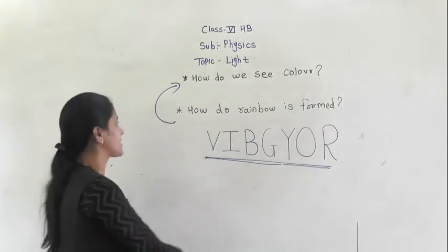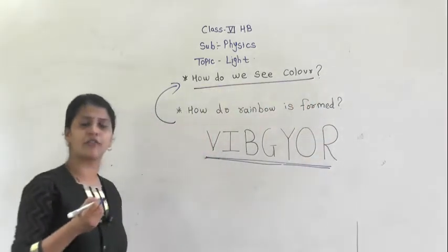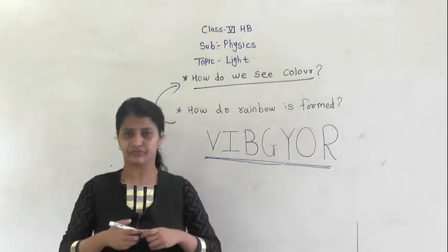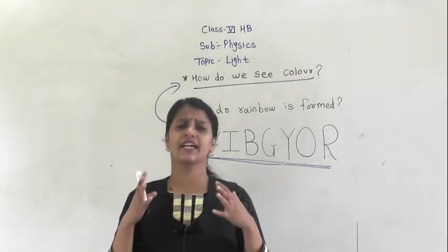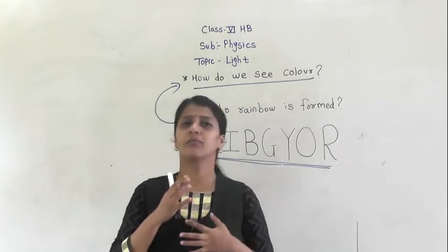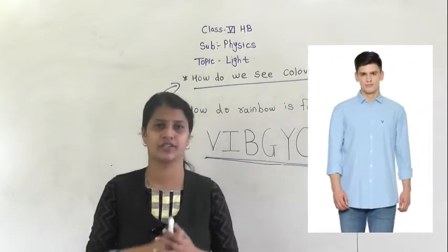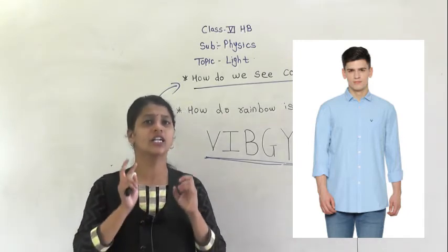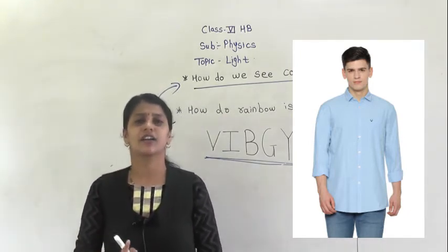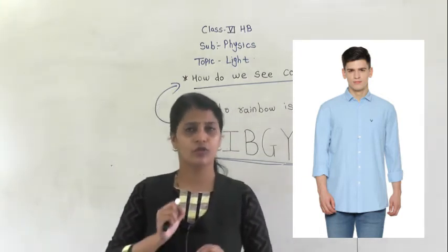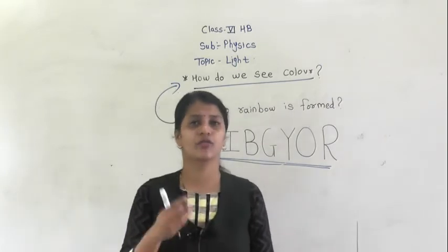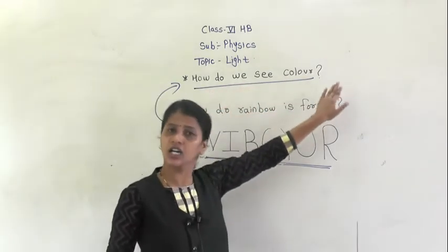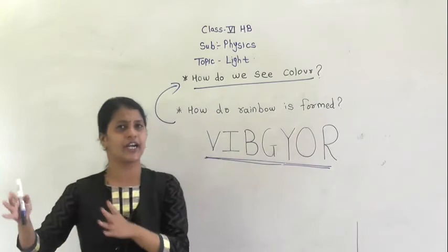This is how we can see and distinguish colors. For example, if a child is wearing a blue shirt, all 7 colors fall on that shirt, but only one color is reflected back — that is blue. So we can recognize that particular color.